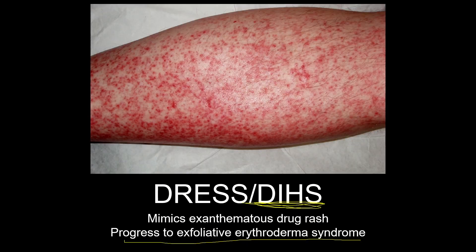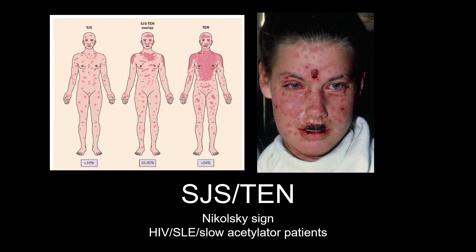SJS and toxic epidermal necrolysis are diseases on a spectrum. SJS is the mild version and it can progress to toxic epidermal necrolysis. Drugs like allopurinol and anticonvulsants cause SJS; infection can also be a factor. SJS involves less than 10% body surface area while toxic epidermal necrolysis covers more than 30%. Predisposition is seen in HIV and SLE patients, or those who are slow acetylators of allopurinol and anticonvulsants.